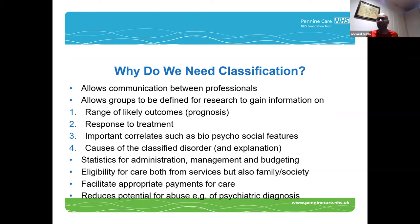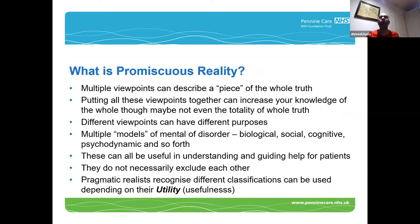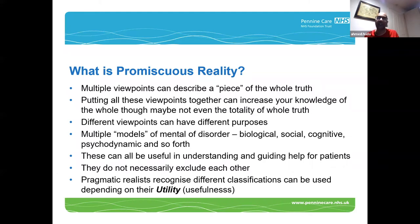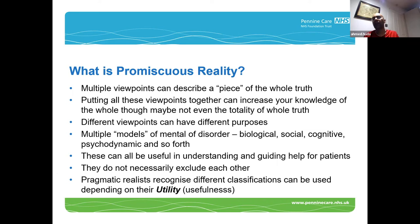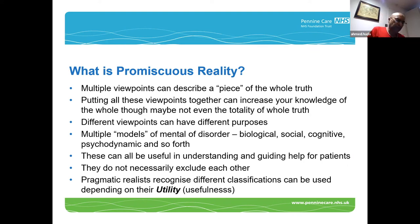One of the reasons for having a standardized classification is that hopefully it will reduce the potential for abuse. For example, the Soviet Union came up with 'sluggish schizophrenia', which was basically used to diagnose people who didn't believe in communism. Unfortunately, like the US constitution, it's fine on paper, but local practices can subvert the intentions. The US constitution said all men are born equal, yet they had slavery.